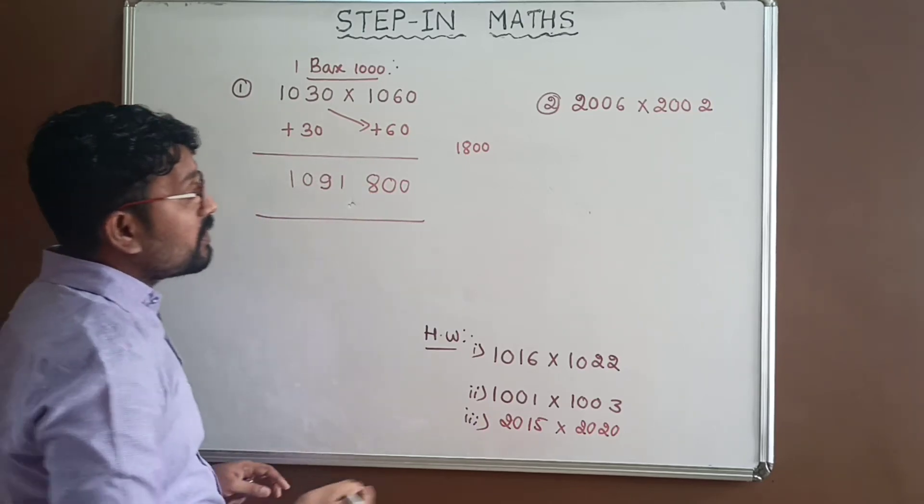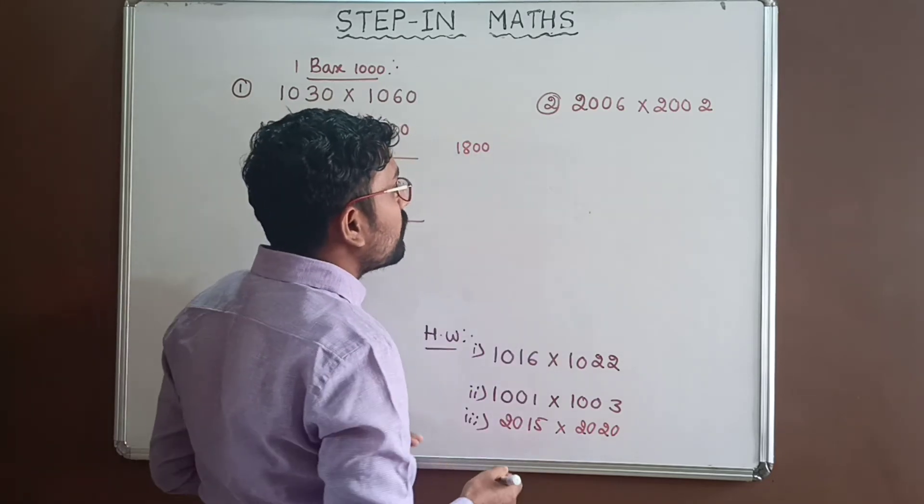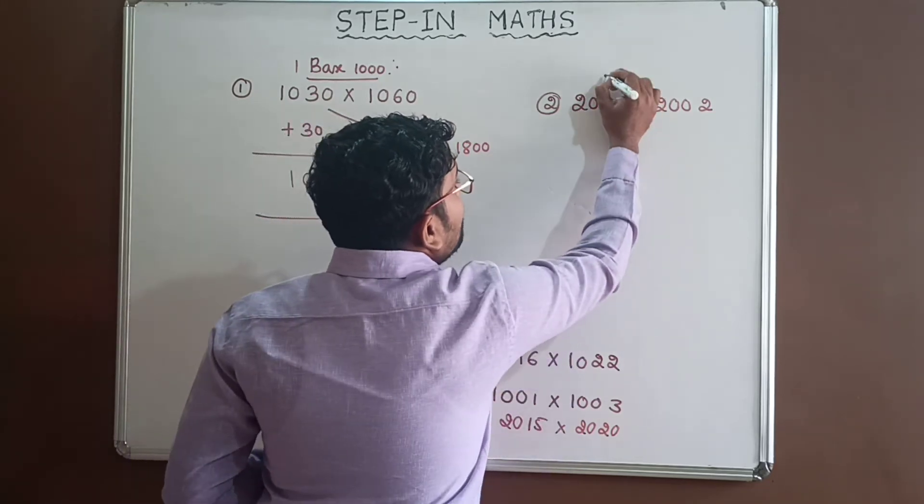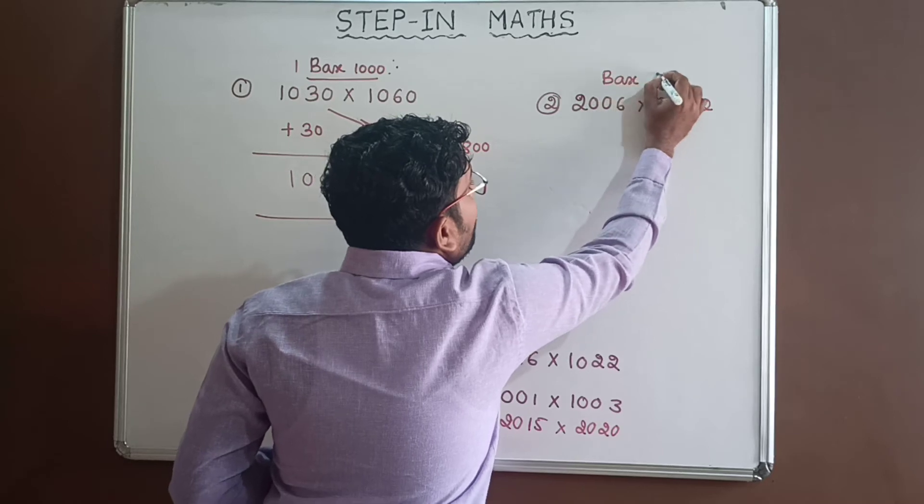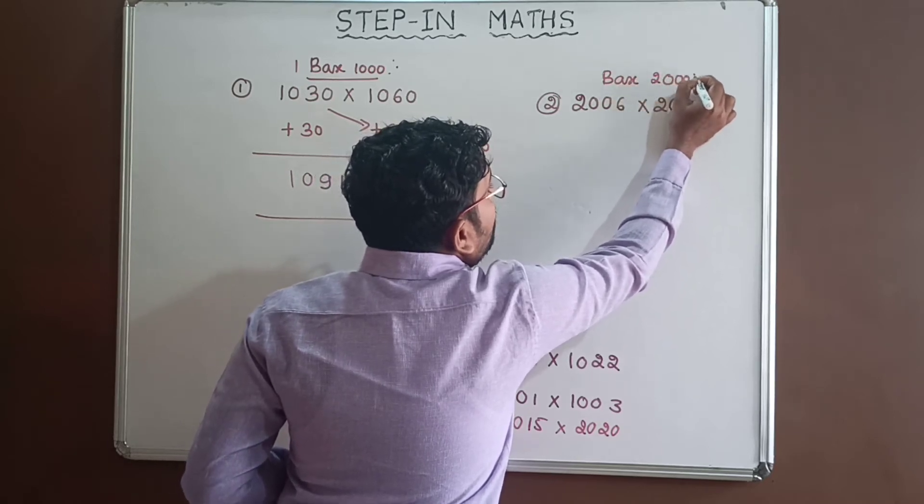And the second one, 2006 into 2002. These two numbers are nearer to 2000, so let us take base as 2000.